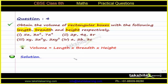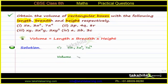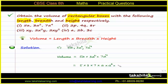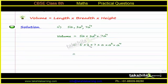In the first part, volume is length into breadth into height. Length is 5a, breadth is 3a squared and height is 7a raised to power 4. Multiplying the number part: 5 into 3 into 7 gives 105. For the variable part: a into a squared into a to the power 4 gives a to the power 1 plus 2 plus 4, which is a to the power 7. So the volume in the first case is 105a⁷.